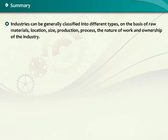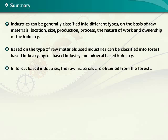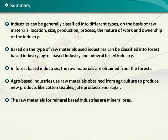To recap: industries are generally classified on the basis of raw materials, location, size, production process, nature of work, and ownership. Forest-based industries obtain raw materials from forests; agro-based industries use agricultural raw materials to produce cotton textiles, jute products, and sugar; mineral-based industries use mineral ores.